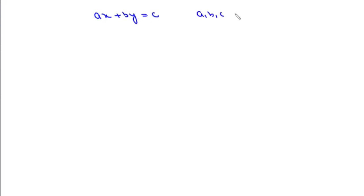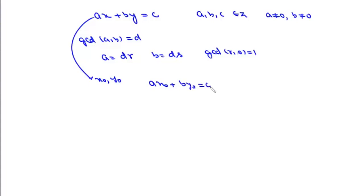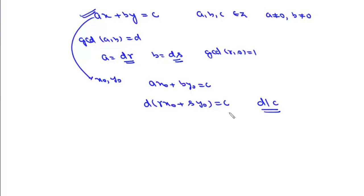Now we will prove this theorem. Suppose we have the linear Diophantine equation where a, b, and c are integers with a ≠ 0 and b ≠ 0. We are looking for integral solutions. Suppose GCD of a and b is d, then we can write a as d·r and b as d·s where GCD of r and s is 1. If this equation is solvable and has a solution x0 and y0, we can write a·x0 + b·y0 = c, which gives d·(r·x0 + s·y0) = c, clearly meaning d must divide c. So this equation is solvable if and only if d divides c.